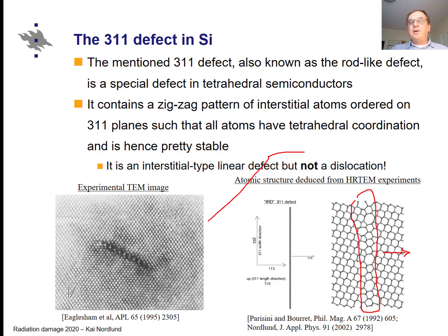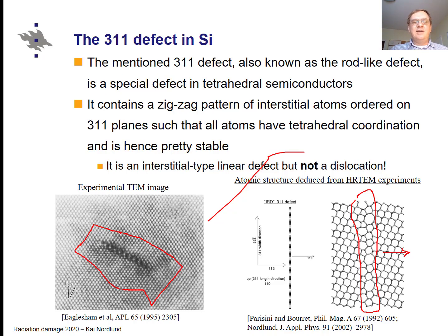The interesting thing about the {311} defect is that, except at the edges, all silicon atoms in it have exactly four nearest neighbors. So it's clearly a defect, but the bonding environment has the correct number of bonds, which is why the {311} defect is stable. Also interesting is that while it clearly looks like a linear defect, it is not a dislocation. If you form the Burgers circuit around the {311} defect, you get a Burgers vector of zero, so by definition it is not a dislocation.